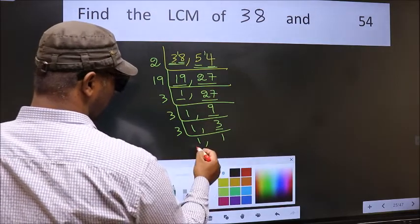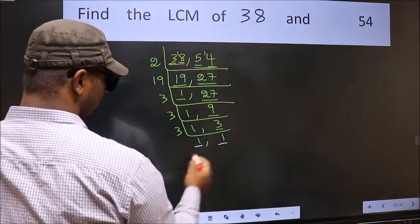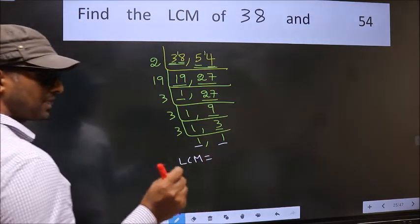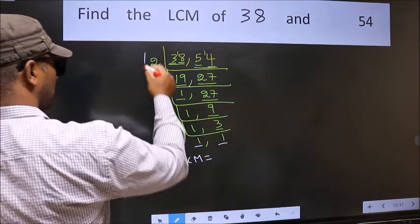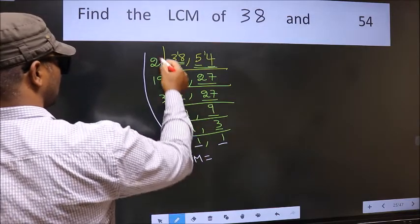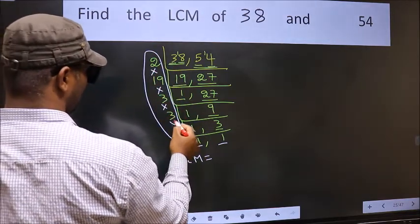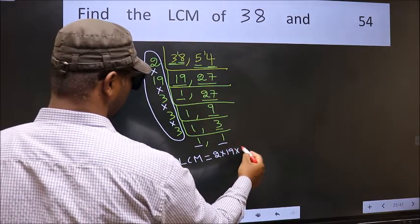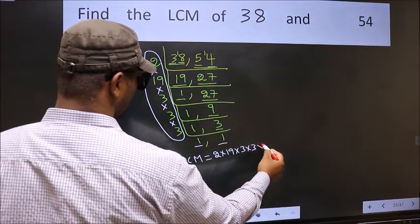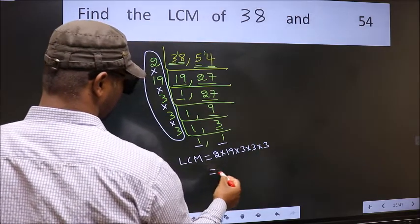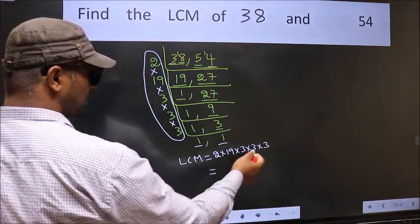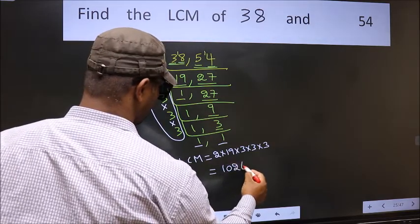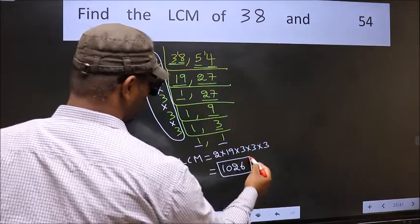We got 1 in both places, so our LCM is the product of these numbers: 2 into 19 into 3 into 3 into 3. When we multiply these numbers we get 1026, which is our LCM.